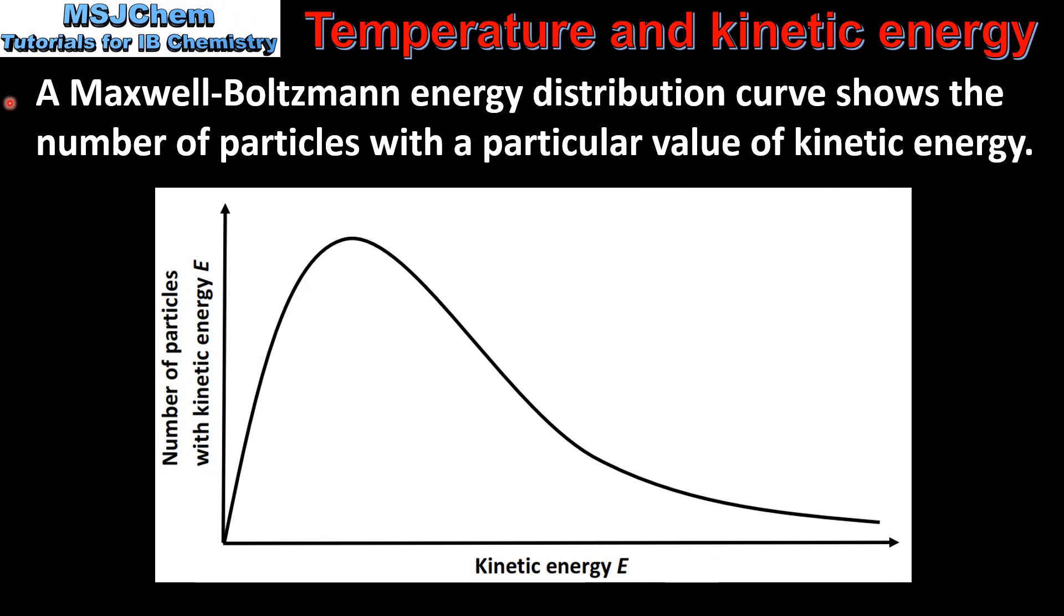A Maxwell-Boltzmann energy distribution curve shows the number of particles with a particular value of kinetic energy. On the y-axis we have the number of particles with a particular value of kinetic energy, and on the x-axis we have the value of kinetic energy. As we can see from the shape of this curve, the particles have a range of kinetic energies ranging from low to high.